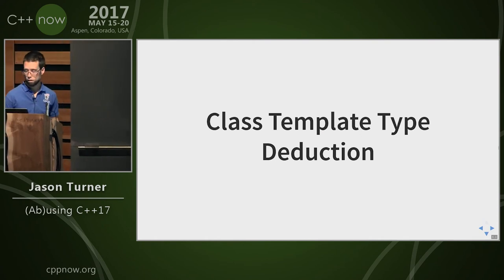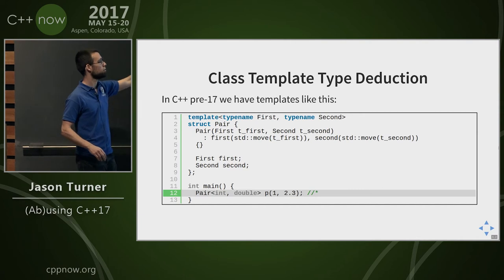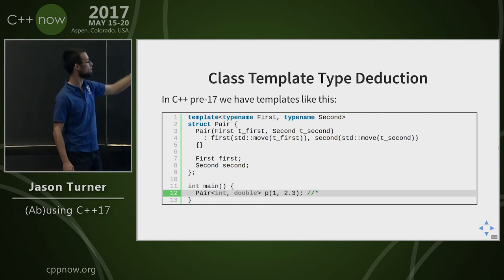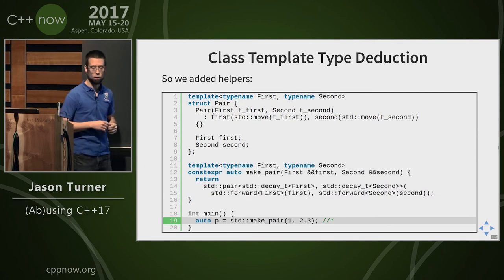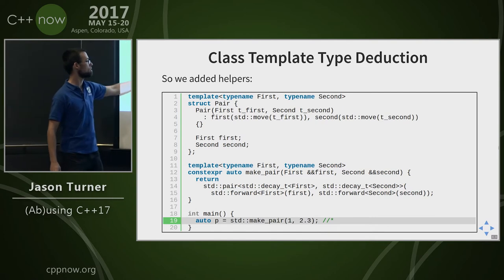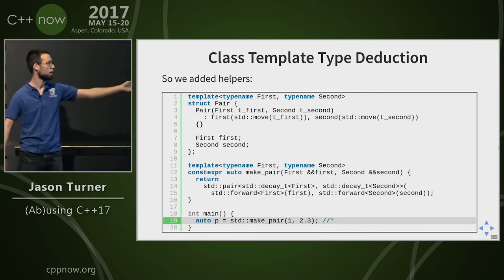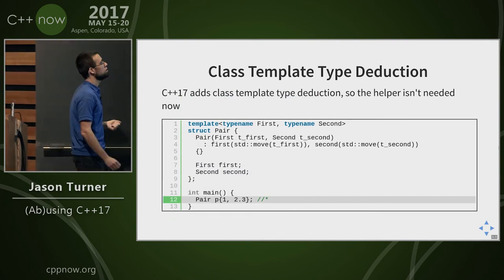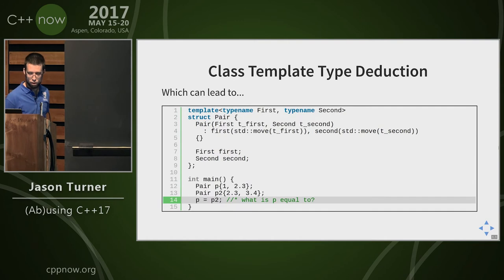C++17 adds class template type deduction. Let's take a journey through history. With a pair type, historically we had to write pair<int,double> explicitly. We thought that was a pain, so we had the make_pair helper using function template type deduction — using decay_t and forwarding into our pair. Now C++17 adds class template type deduction: we don't have to specify the type anymore, we don't need our helper. It's like magic.